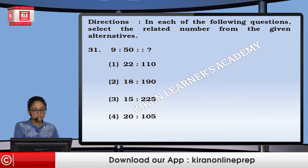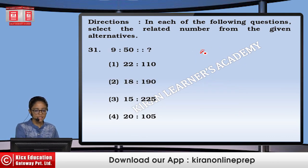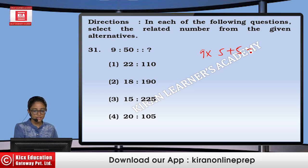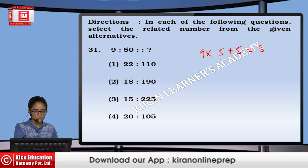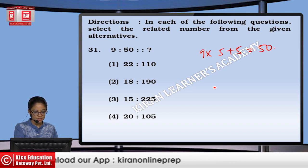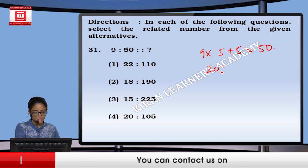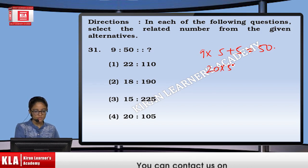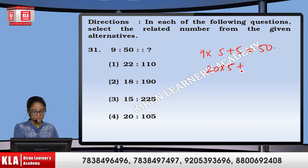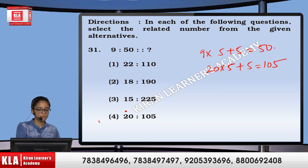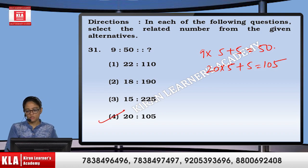Next, 9 into 5 plus 5 gives us 50. Similarly, 20 into 5 plus 5 gives us 105. That means option number 4.